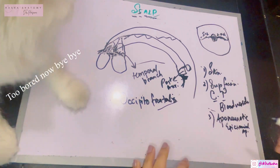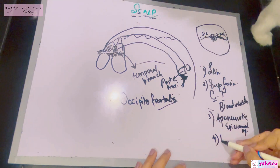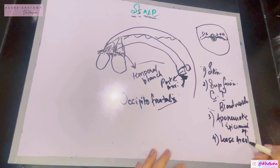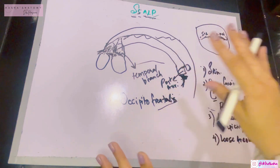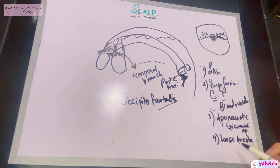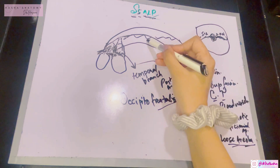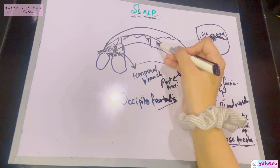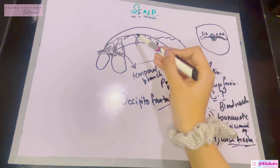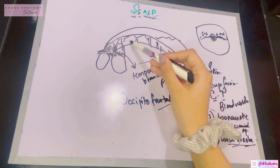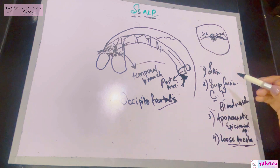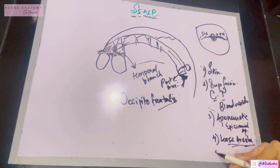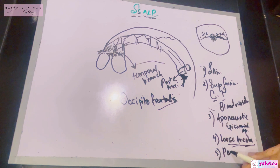The next layer — L — is the Loose areolar tissue, lying immediately below the epicranial aponeurosis, also known as the sub-aponeurotic layer. This layer is important because it is known as the dangerous area of the scalp, as the emissary veins run through it. It is also known as the safety layer, which we'll discuss in the clinicals.